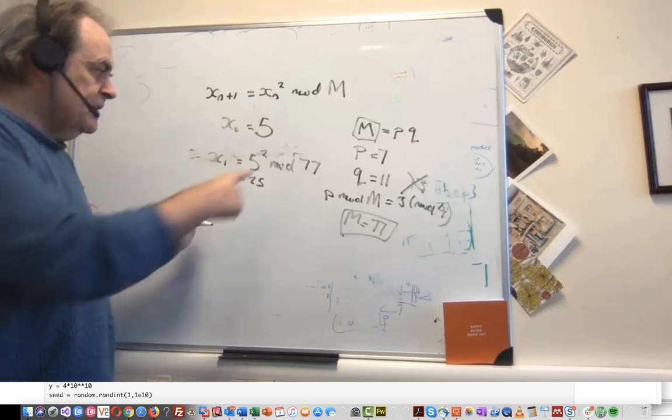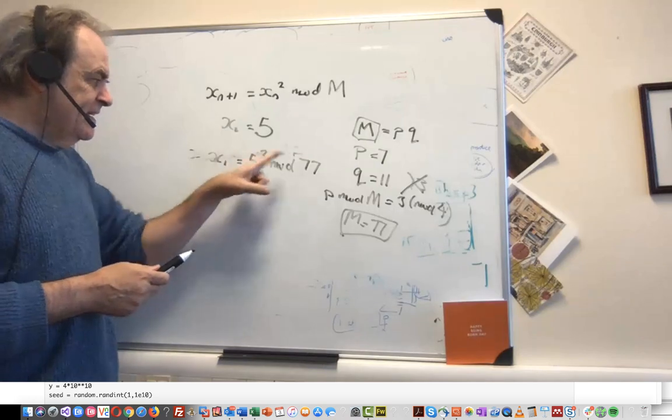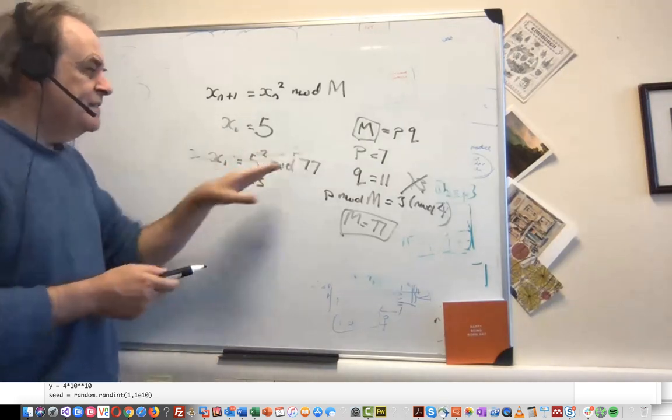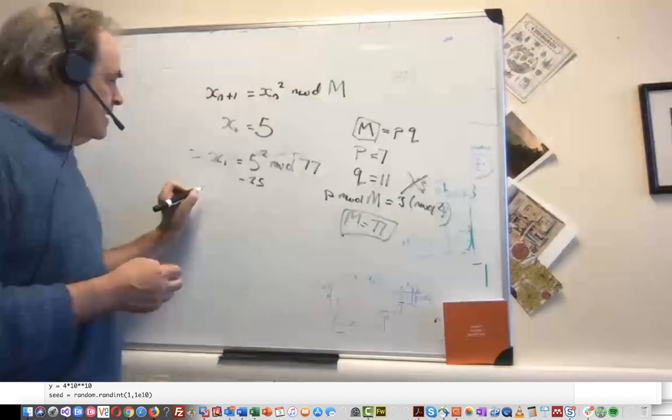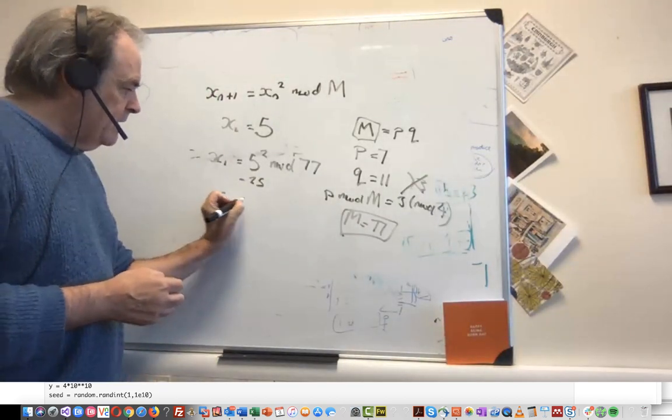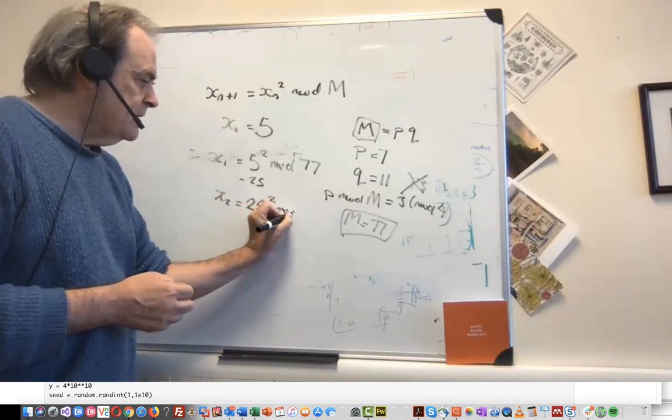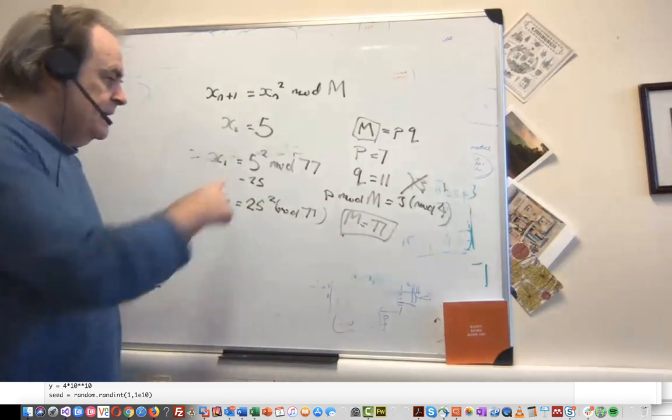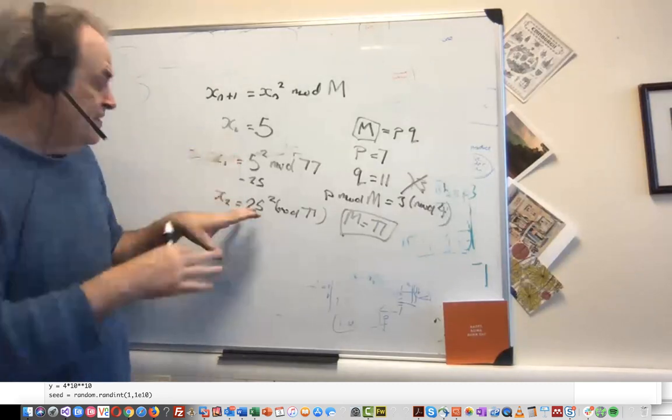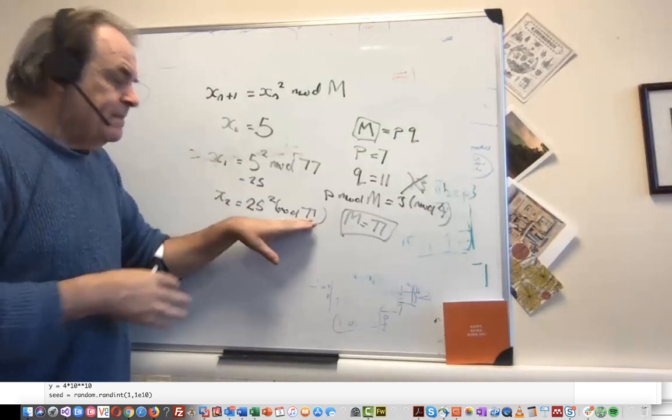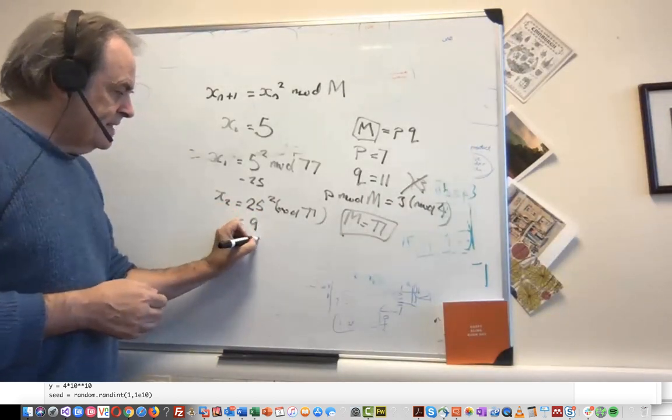Of course it is, because it's mod 77 and we haven't exceeded 77, so it's just the result from our remainder there. And then x_2 will be equal to 25 squared mod 77. That's 25 squared, 625 or so, and then divide by 77 and find the remainder, and we find that out as 9.